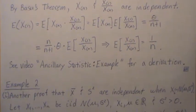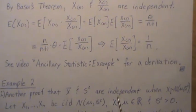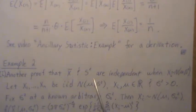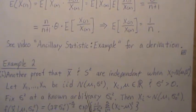Example two: another proof that the mean, the sample mean and sample variance are independent when Xi is from a normal distribution. So let's let Xi be IID normal mean mu variance sigma squared.